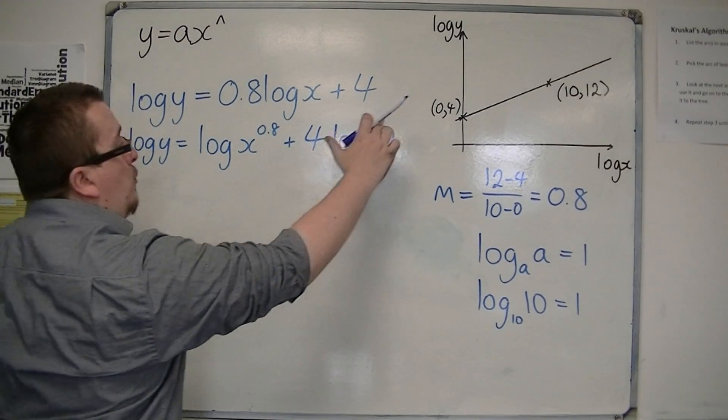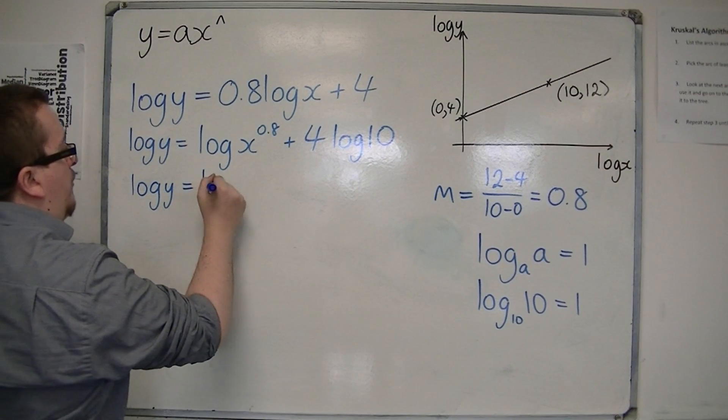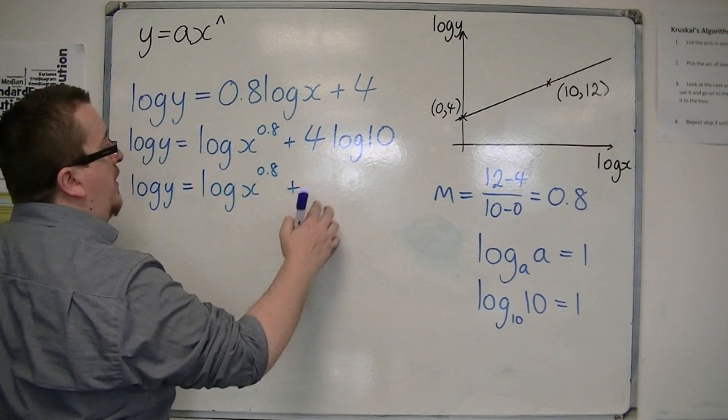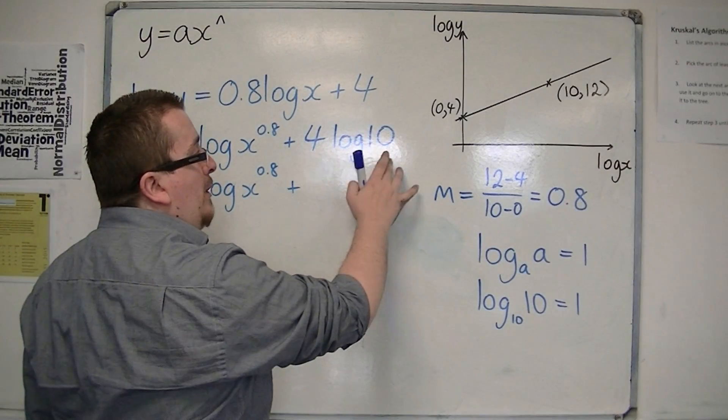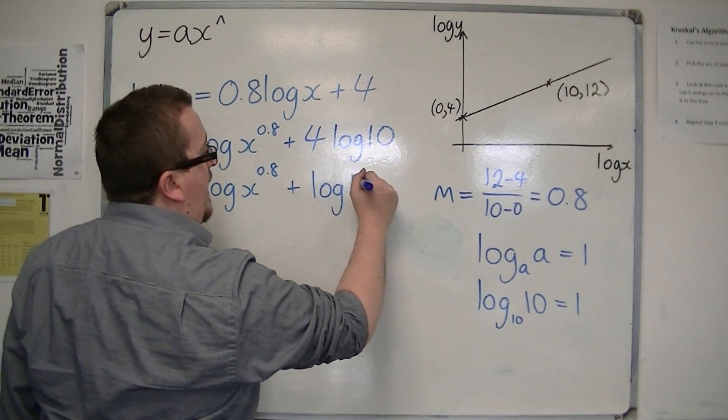Now, that 4 can be brought up to the power there. So, that's log y is equal to log of x to the 0.8, plus, if the 4 comes to the power, then I've got log of 10 to the 4, which is log of 10,000.